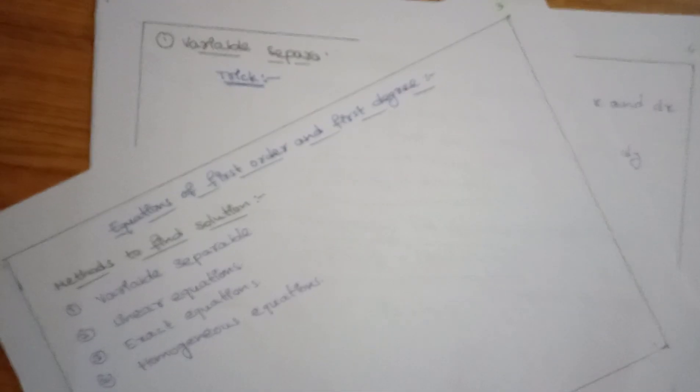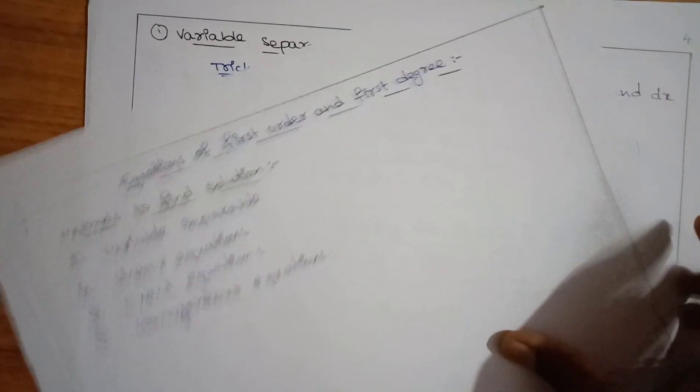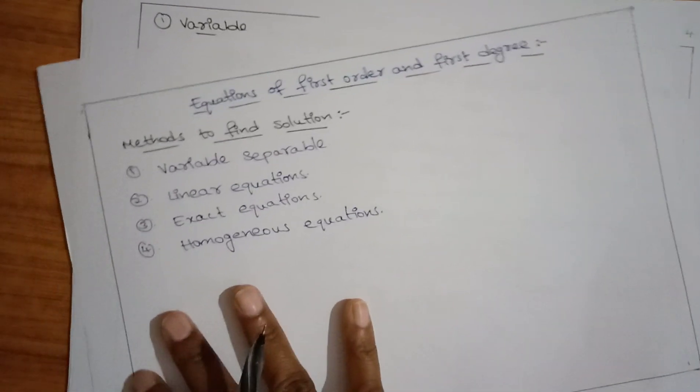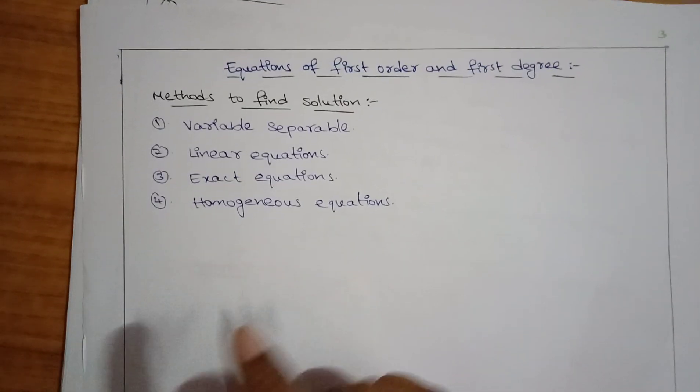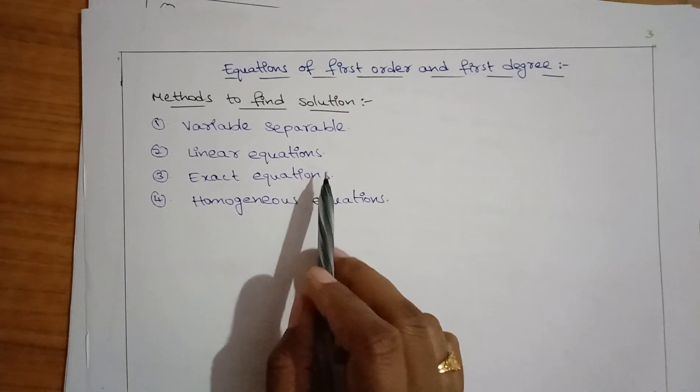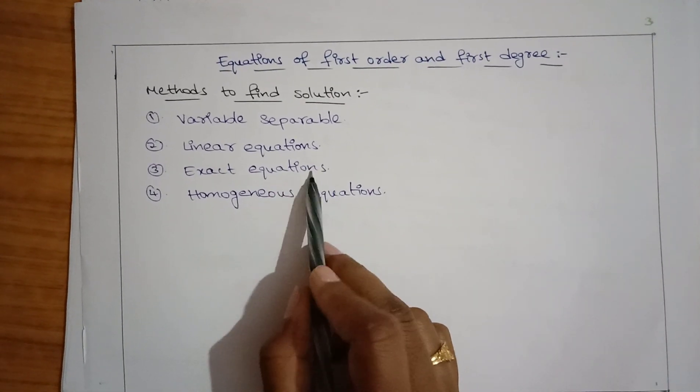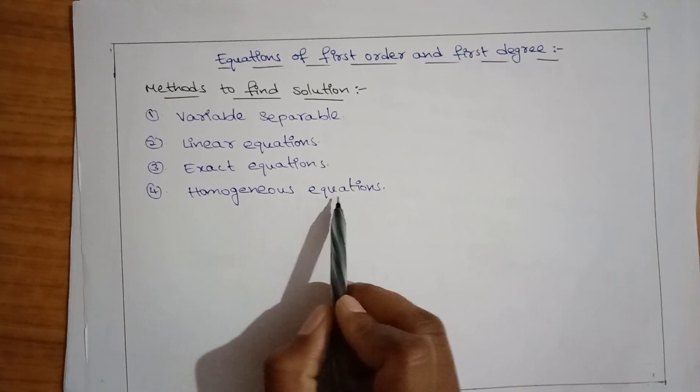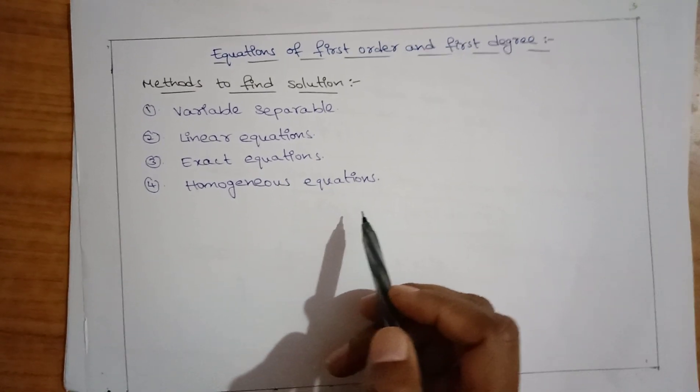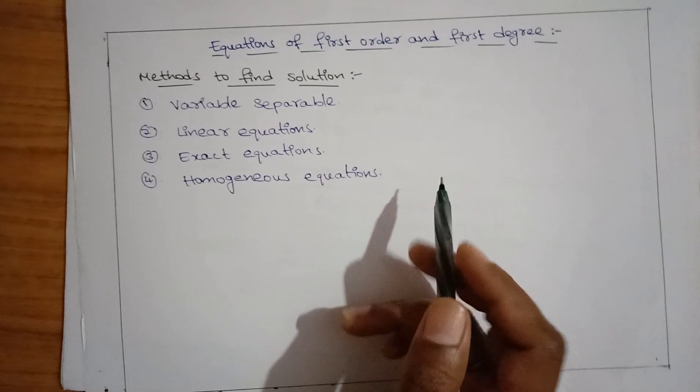To solve partial differential equations, we have various methods. We have four methods: the first is the variable separable method, next is linear equations, exact equations, and homogeneous equations.